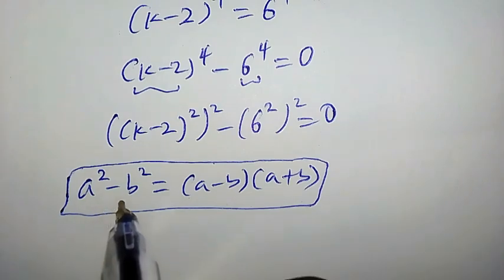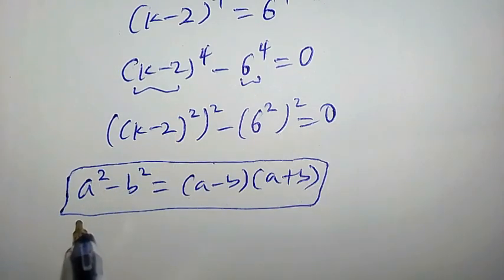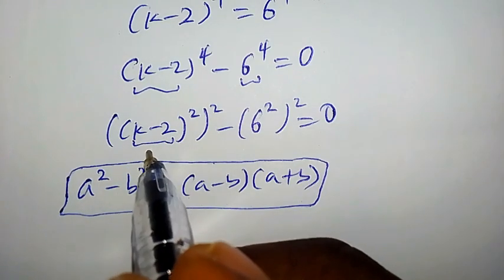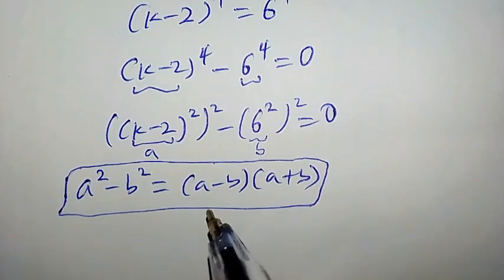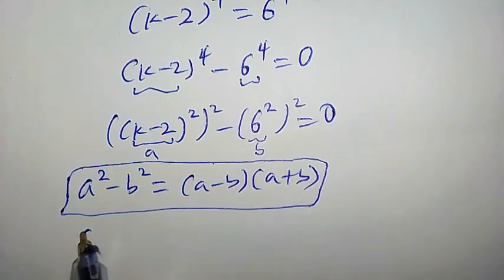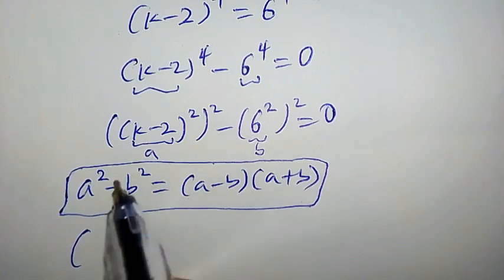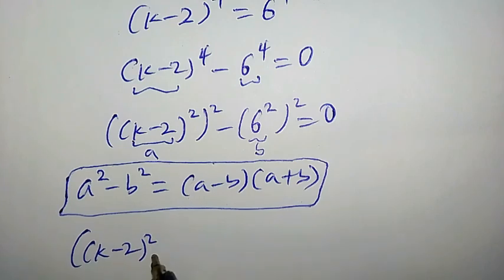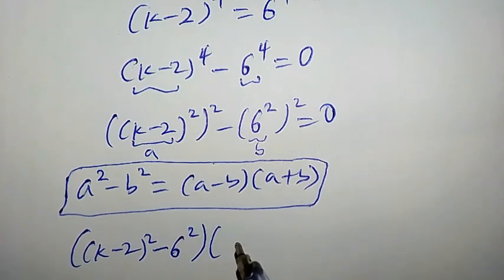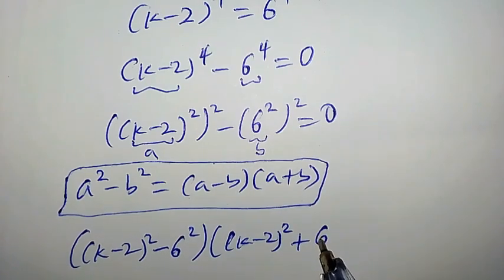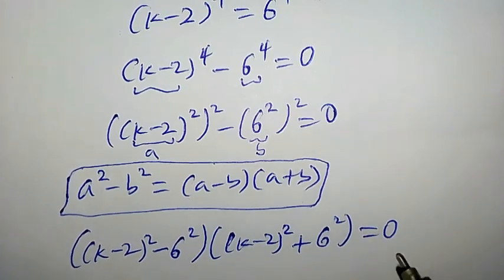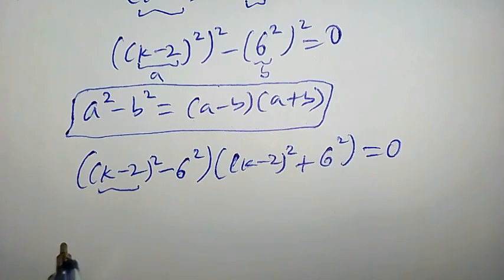Let's continue by comparing the left-hand side with this identity. You will observe that our a is k minus 2 to the power of 2, and our b is 6 to the power of 2. So this whole expression will now become: a minus b, which is k minus 2 to the power of 2 minus 6 to the power of 2, times a plus b, which is k minus 2 to the power of 2 plus 6 to the power of 2, all equal to 0.